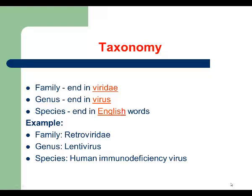We continue our lecture with Taxonomy. Let's talk about how we create names for viruses. At first, viruses were named according to their host range or the organ system they affected. However, by the 1960s, virologists realized that some viruses can affect more than a single organ system or host.